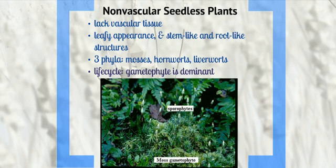In their life cycle, the gametophyte is dominant. The sporophyte is dependent on the gametophyte and produces spores.